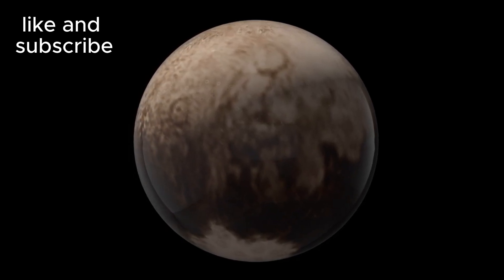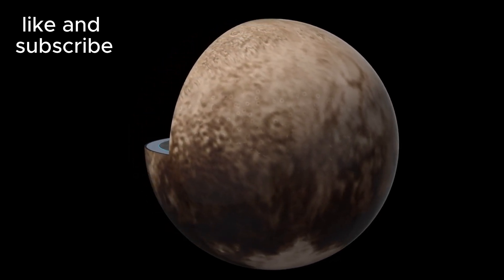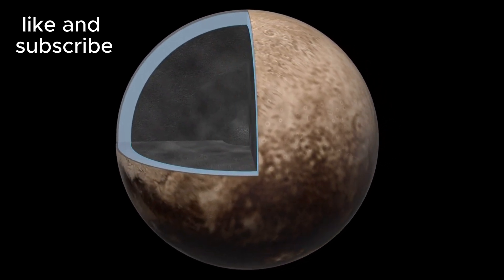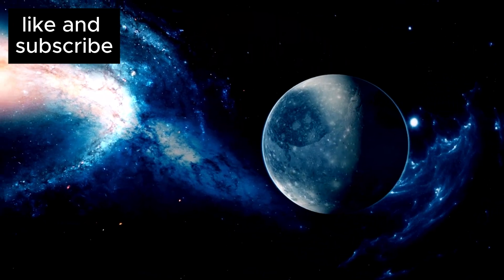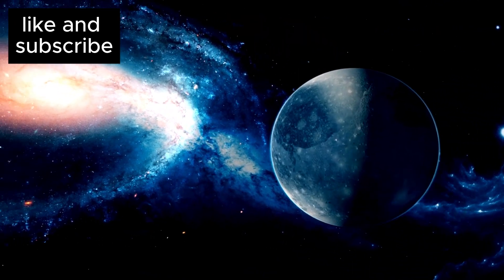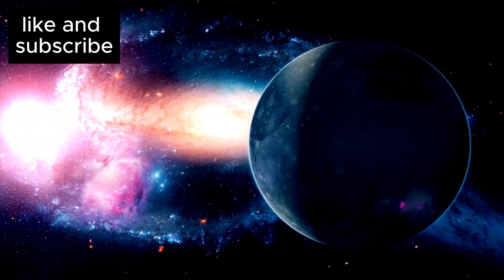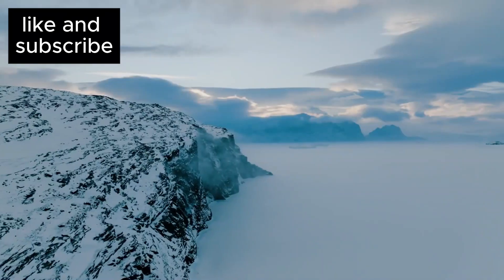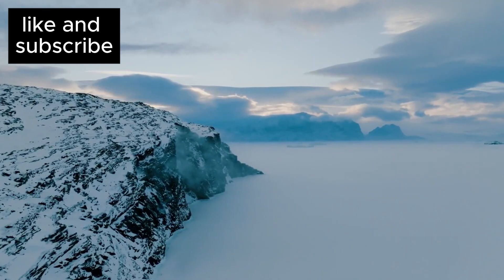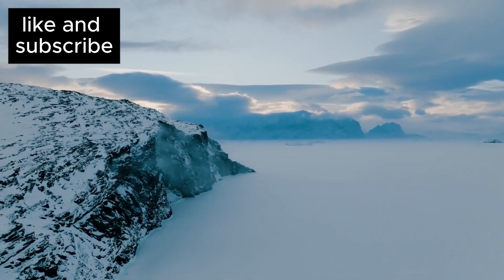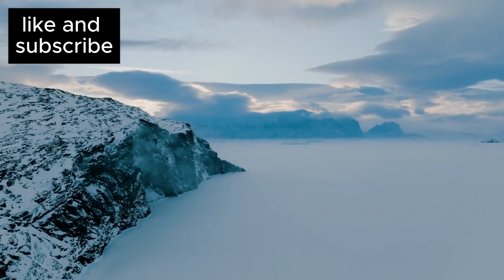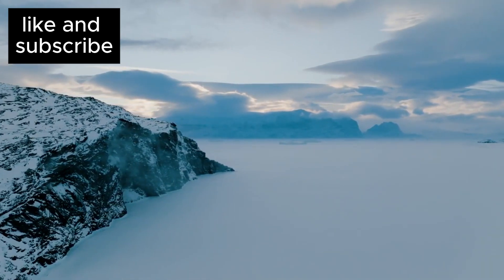But the heart isn't the only thing that has scientists scratching their heads. Pluto's surface is telling a story of geological activity and dynamism that was previously thought to be impossible for such a small, distant planet. On Pluto, vast mountain ranges made of solid water ice rise over four miles high, towering structures that rival some of the tallest mountains on Earth.